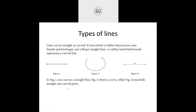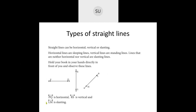Then we saw types of lines. You have straight line or curved line. Types of straight lines are horizontal, vertical, and slanting lines. Horizontal lines are sleeping lines, vertical lines are standing lines, and lines which are neither horizontal nor vertical are called slanting lines. PQ represents a horizontal line, RS is vertical, and LM is a slanting line.